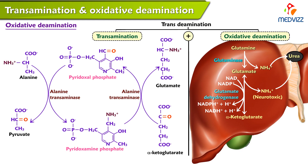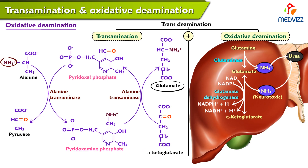Trans deamination: the amino group is transferred and then undergoes deamination. For example, the amino group from alanine is transferred to alpha-ketoglutarate to become glutamate, and glutamate undergoes deamination releasing ammonium ion and alpha-ketoglutarate. The ammonium ion goes into the urea cycle. Transamination and oxidative deamination coupled together is referred to as trans deamination, which helps transfer primary amino groups from peripheral tissues to the liver for safe handling and urea production.